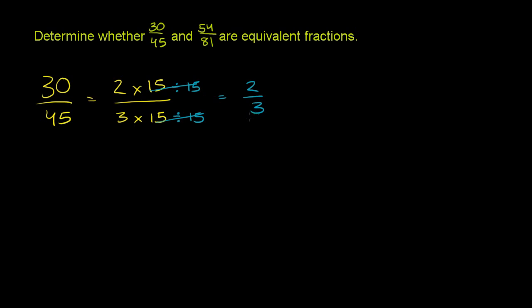Now let's think about 54. Let's try to do 54 over 81. Now let's see. Nothing really jumps out at me. Let's see, 9 is divisible into both of these. We could write 54 as being 6 times 9, and 81 is the same thing as 9 times 9.